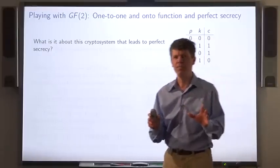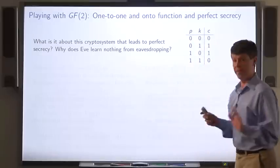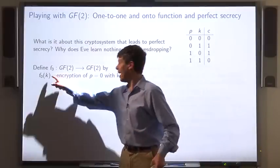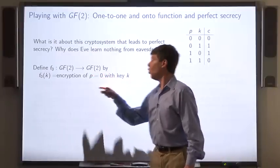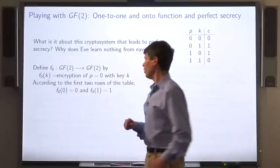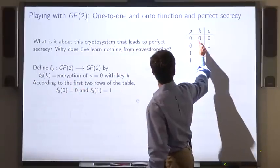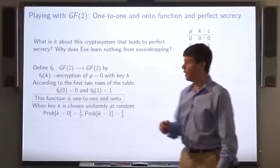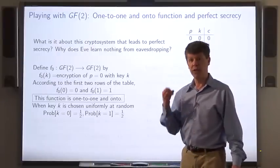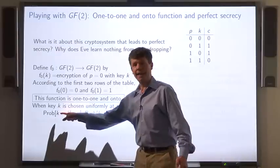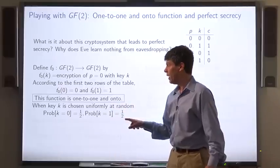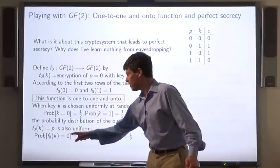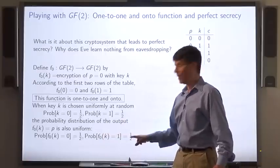What is it about this cryptosystem that leads to perfect secrecy? Why does Eve learn nothing from eavesdropping? Well, let's define the function f0 as follows. f0 takes as input the key k, and outputs the encryption of plaintext 0 with that key. So, according to the first two rows of this table, f0(0) = 0 and f0(1) = 1. This function is 1-to-1 and onto. Now when the key k is chosen randomly according to the uniform distribution, that is when k is 0 with probability 1/2 and 1 with probability 1/2, then the probability distribution of the output is also uniform. That is, the probability that the ciphertext is 0 is 1/2 and the probability that the ciphertext is 1 is also 1/2.